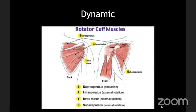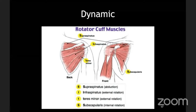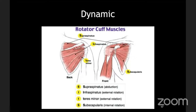Even though the deltoid is intact, without cuff function you cannot achieve abduction. The humeral head is not brought down to the widest part of the pear-shaped glenoid, and it will articulate with the narrowest part, preventing further abduction. The concept has changed — it is not the supraspinatus that initiates the first few degrees of abduction, but the cuff that brings the humeral head to the widest part of the glenoid and stabilizes it. This principle is applied in reverse shoulder arthroplasty.